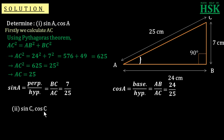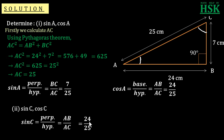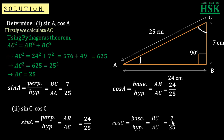In the second part we calculate sine C and cos C. Sine C equals perpendicular upon hypotenuse. With respect to angle C, the side opposite is AB, so sine C equals AB upon AC, which is 24 upon 25. Cos C equals base upon hypotenuse, that is BC upon AC. With respect to angle C, the opposite side is the perpendicular, AC is the hypotenuse, and the remaining side BC is the base. BC is 7 and AC is 25, therefore cos C equals 7 upon 25.